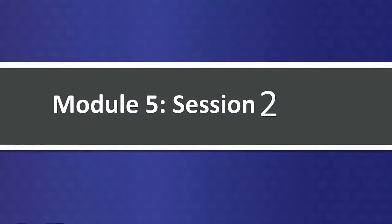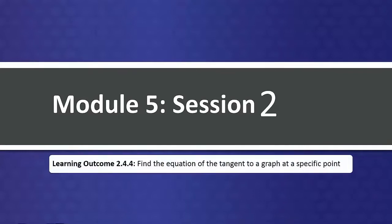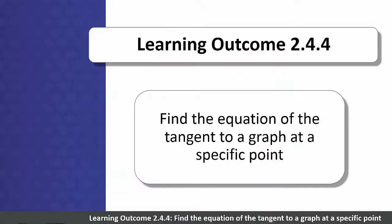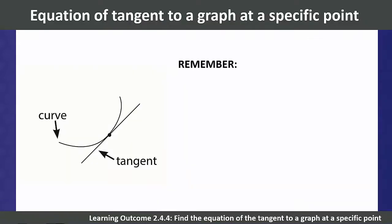Module 5, Session 2 will cover learning outcome 2.4.4: find the equation of the tangent to a graph at a specific point, and learning outcome 2.4.5: solve practical problems involving rates of change.